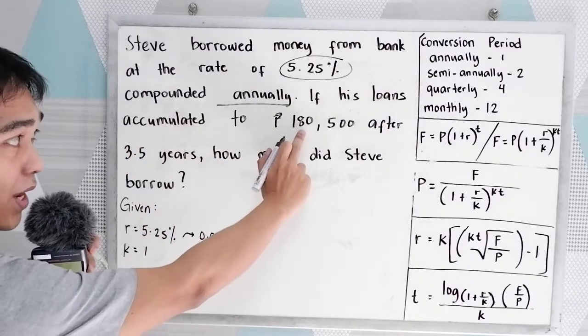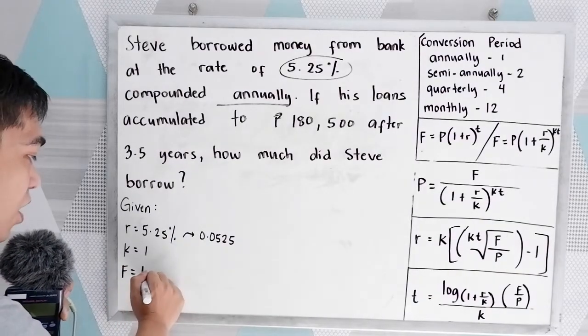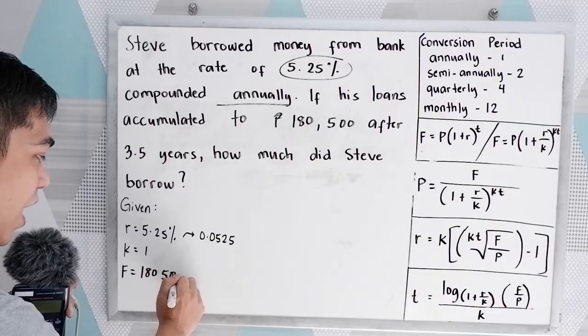Accumulated loan is 180,500. So that would be our future value, or F, 180,500 pesos.